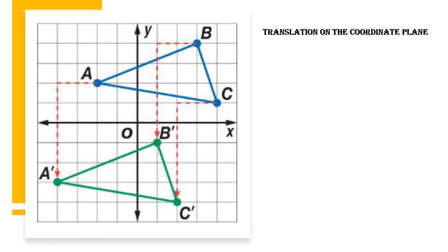Let's take a look at translations specifically on the coordinate plane. Here we have a four-quadrant graph with two shapes. Our blue shape is our pre-image and our green shape is our image. We're going to look at the vertices as ordered pairs. Point A is at (-2, 2), point B is at (3, 4), and point C is at (4, 1). As we look at our image, A prime is at (-4, -3), B prime is at (1, -1), and C prime is at (2, -4). Each image has been translated two units left and five units down.